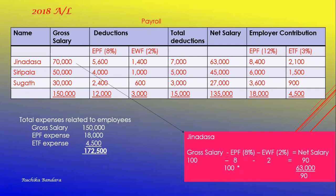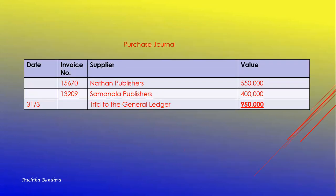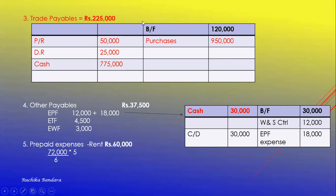2018 A-level, question number 4. The requirements are: number one, a payroll; number two, employee-related expenses; number three, purchase journal and cash payment journal; and given asset and liability balances as at 31-3-2018. Transactions with Northern Publishers: purchase of books on credit 550,000 — that goes to the purchase journal with invoice number, Northern Publishers, 550,000. Return of books that did not match specification: 50,000 — that goes to trade payable account, debit side, purchase return 50,000.